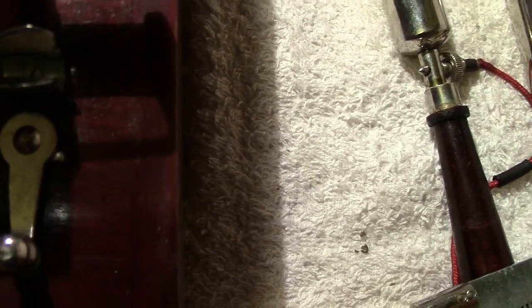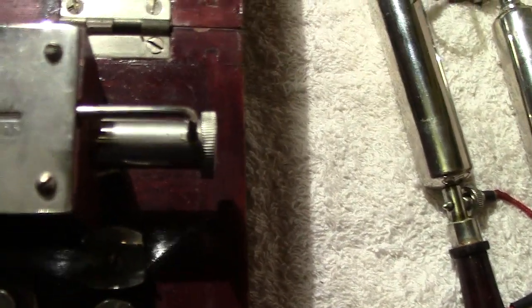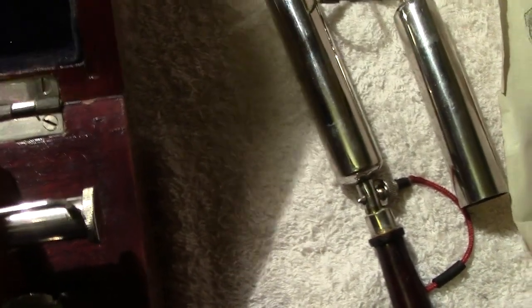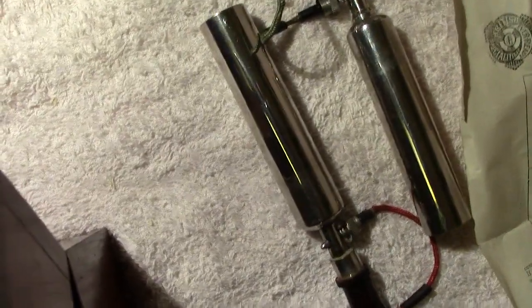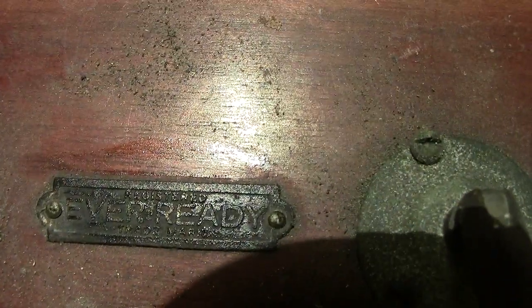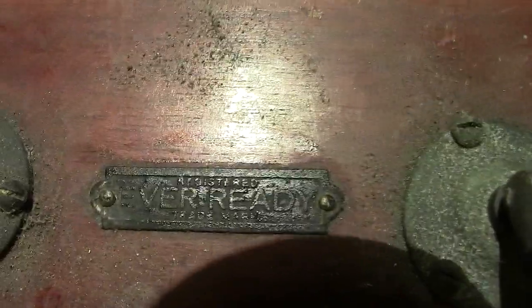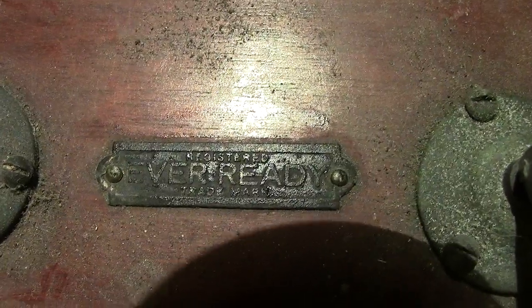That, believe it or not, is basically it. It's probably a mahogany box - it looks like it's made of mahogany. Any questions, please ask and I'll try and give you the answer. Sorry about the fact it's got a little bit dusty on top. There you'd have the name which shows up - EverReady.